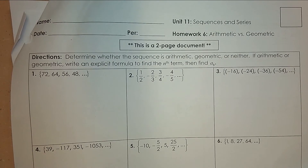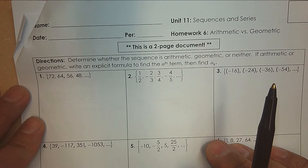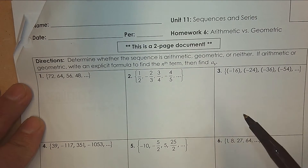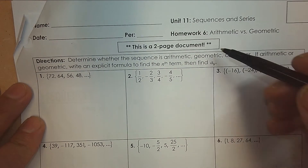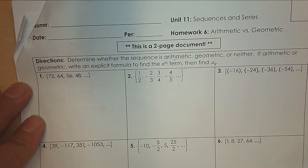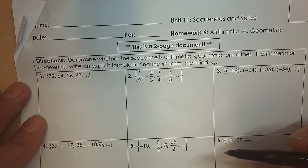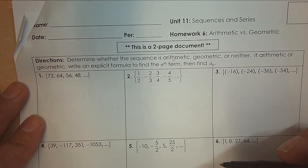Here's your homework review combining arithmetic and geometric sequences, seeing if you can identify which one it is. For number seven, determine whether the sequence is arithmetic, geometric, or neither. And if it is, write an explicit formula, then find the ninth term.